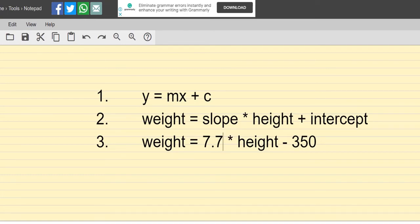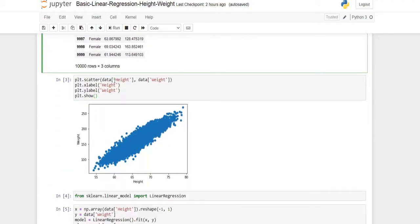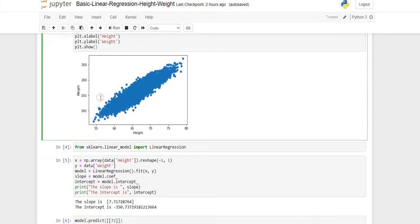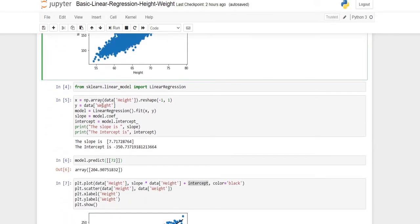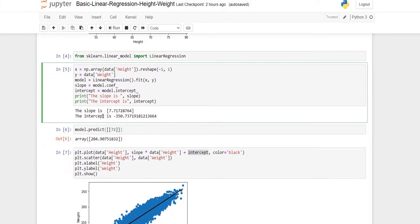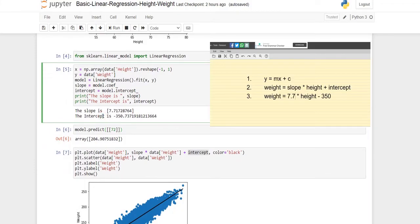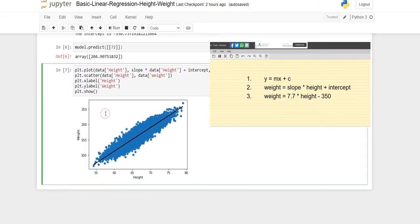In short, what we have done in this video to create this linear model is: first, we imported the dataset and created a scatter plot to understand the relationship between height and weight. After that, we created a linear model and used this model to predict a value. Then we used the linear model's slope and intercept to create the formula and plotted it in the graph to show that there is a linear relationship.